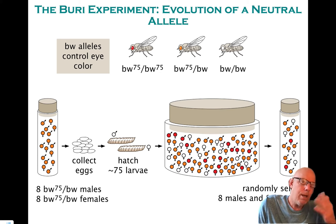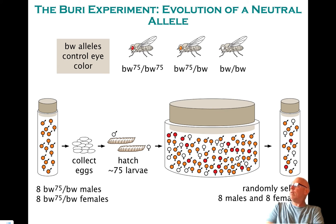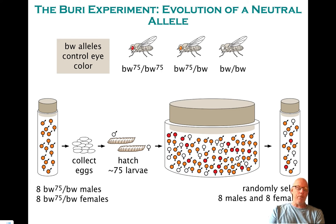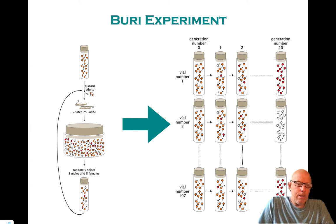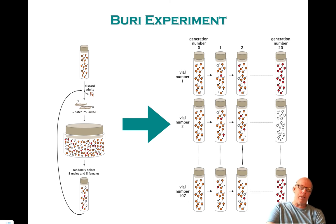Initially there were no reds and no whites, and as time goes on we get more red and white-eyed flies. The reason for this is that the mating is probabilistic. The male and female in the initial population each harbored one red and one white allele, meaning there was a one-quarter chance their offspring would be white-white, a one-quarter chance they'd be red-red, and a one-half chance they'd be red-white. He collected generation after generation across 107 different vials, keeping track of the number of red and white alleles.